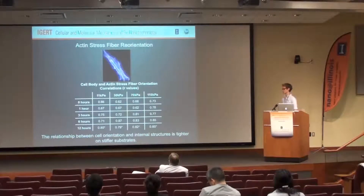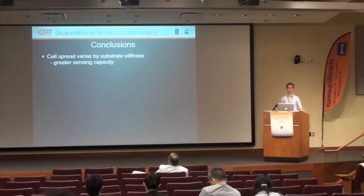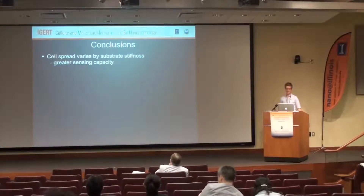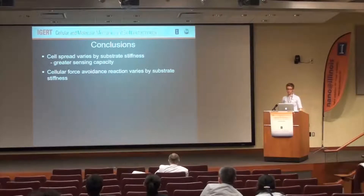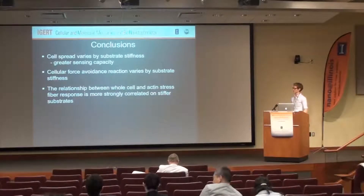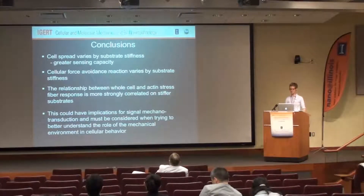The relationship between cell orientation and internal structures is tied to the stiffer substrates. Overarching conclusions: cell spreading varies by substrate stiffness, giving a greater capacity to sense mechanical strain. The cellular force avoidance reaction varied by substrate stiffness in accordance with our hypothesis. There was a relationship between the whole cell and the actin stress fibers, more strongly correlated on the stiffer substrates. This may also have implications for mechanotransduction signaling.